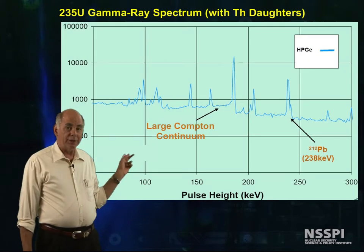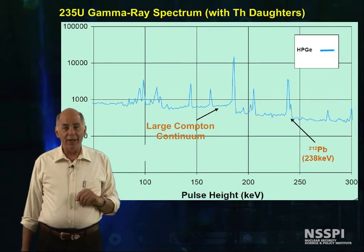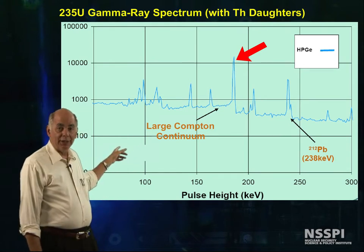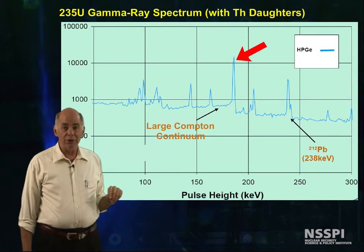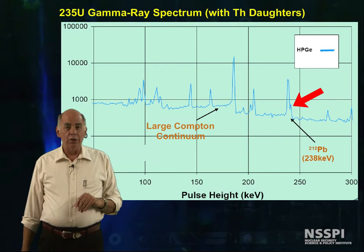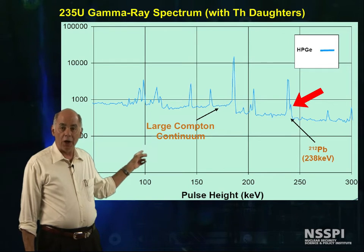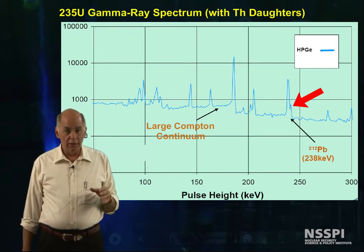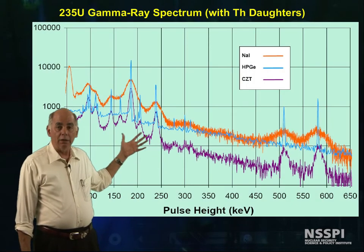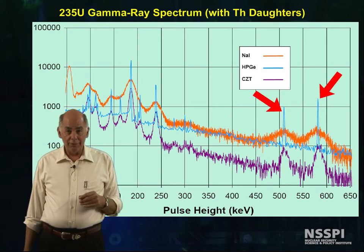Now let's look at a spectrum that is not quite so pretty, and see where this Compton-to-186-line ratio would lead us astray. If we look at our 186 line, we see that in this spectrum it sits on top of a large Compton continuum generated by higher-energy photons. The lead-212 gamma is a clue that something is not right — this is the daughter at the bottom of the thorium chain, not the U-235 chain or the U-238 chain. If we zoom out, we now see that there are peaks from the ingrowth daughters above 250 keV.